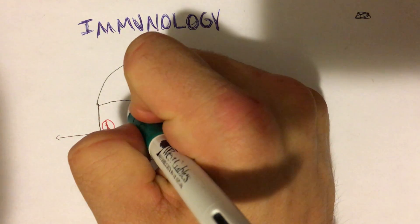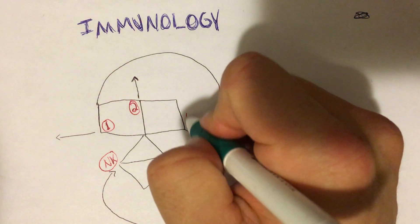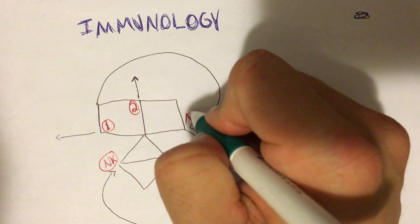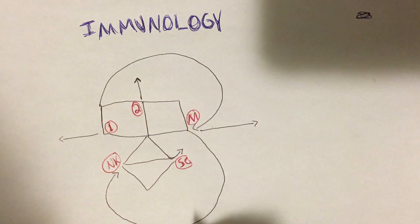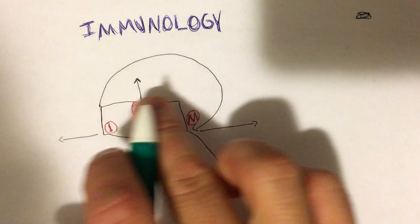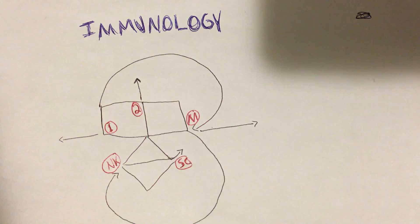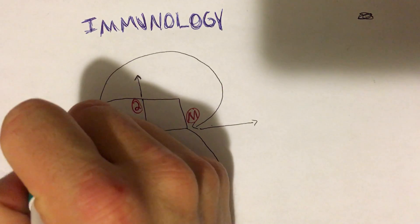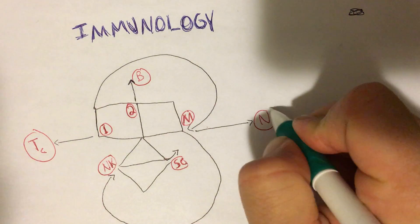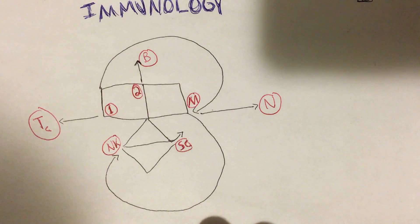We're going to put our helper T cell subtype one, helper T cell subtype two, and then a macrophage right here. You can see that sort of this star arrangement - they sort of go around and that's like five points there.